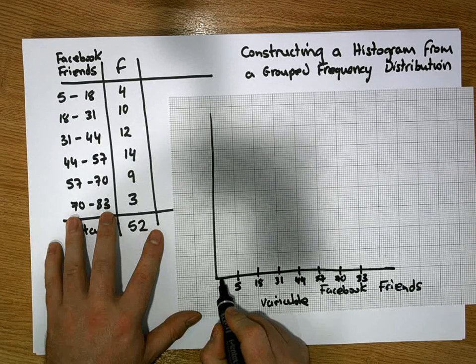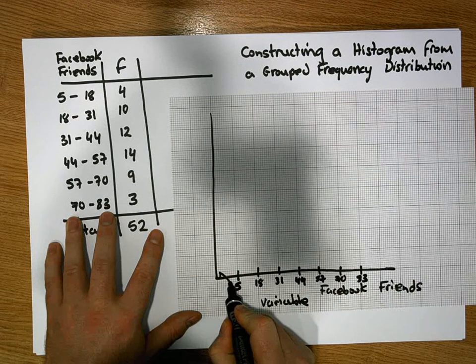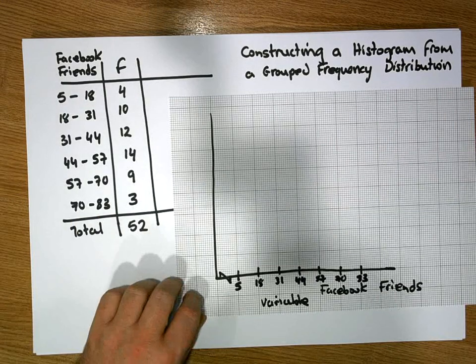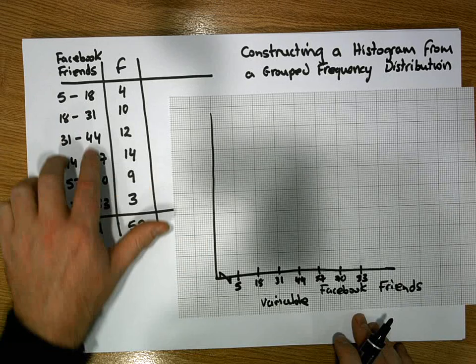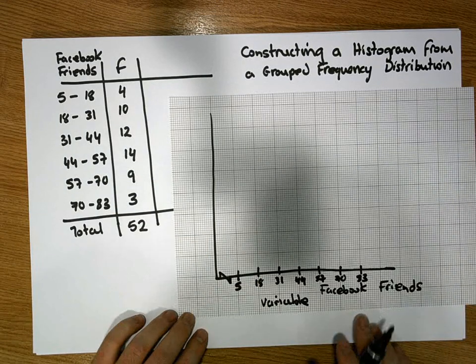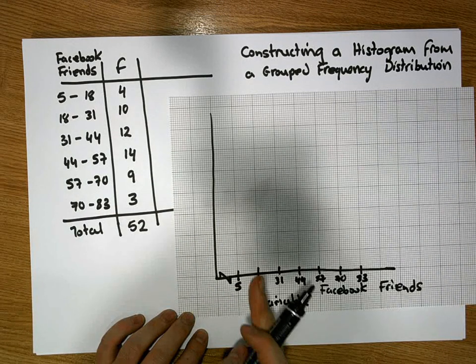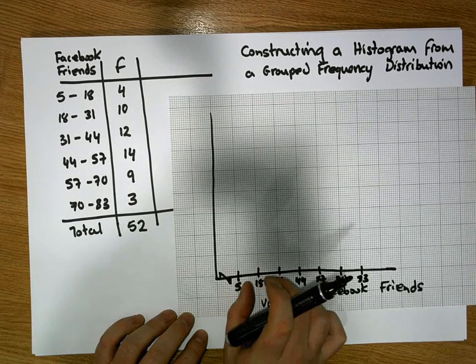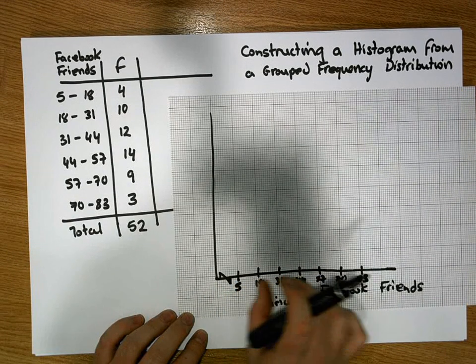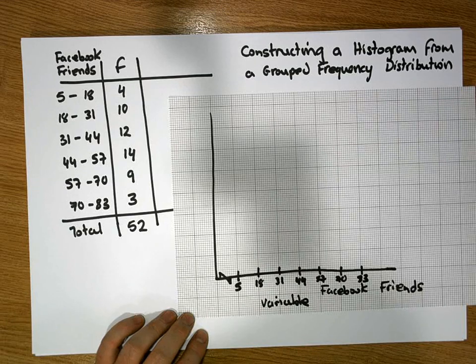Now just be careful here. The scale is not consistent. As in, this represents the distance of 5, but each one of these intervals represents the distance of our class width, which is 13. So I'll just put that little symbol in here to indicate, it's like a little spring to say that that particular interval here isn't a representative size with respect to the others.